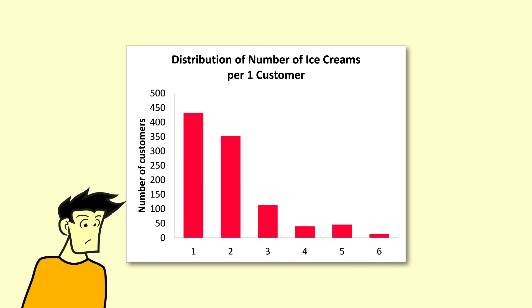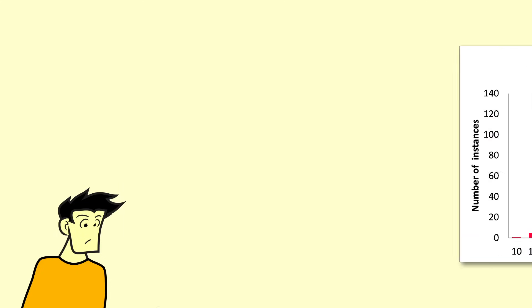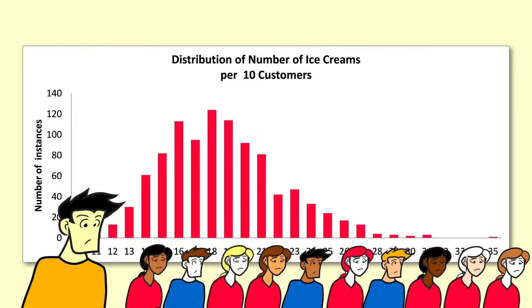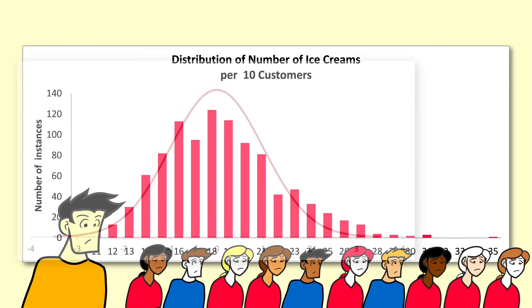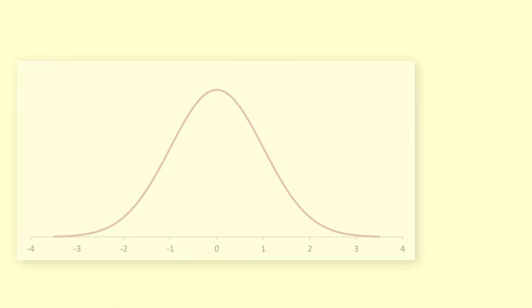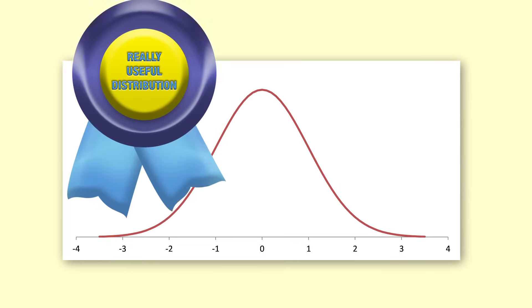So, even though the distribution for each individual customer is nothing like the normal, once we add even ten customers together, the resultant distribution closely resembles the normal distribution. That is why the normal distribution is so useful.